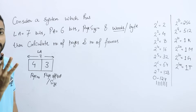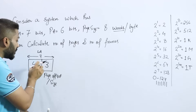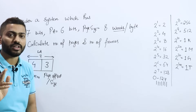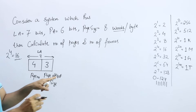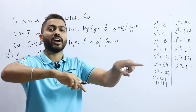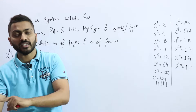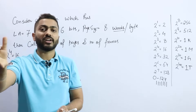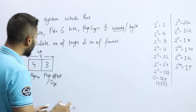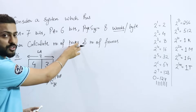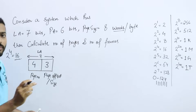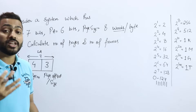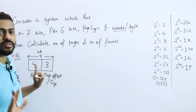The page number bits are 4. But don't be confused — the number of pages is not 4. The number of pages is 2 raised to power 4, which equals 16. Here, 4 is just the number of bits required to represent the page number. When we need the actual count, we calculate 2 raised to the power of those bits. So the total number of pages is 16, and 4 bits are needed to represent them.